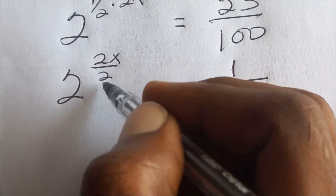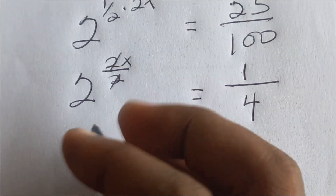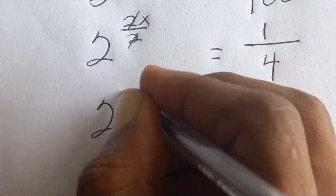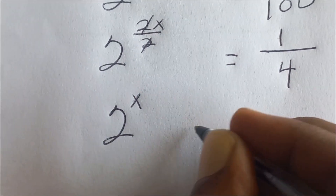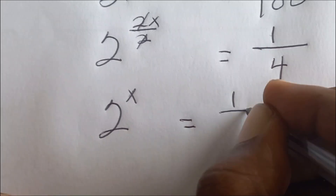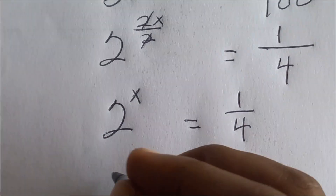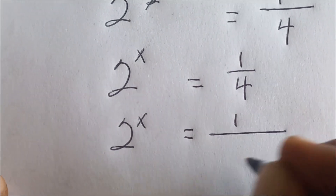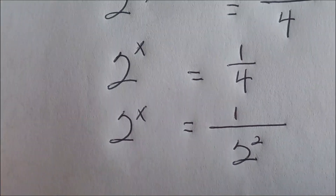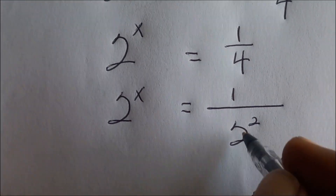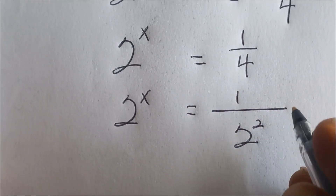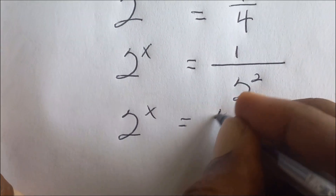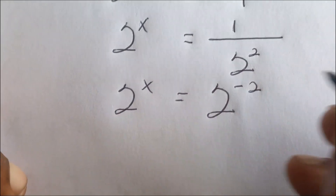Four times. So 2 will cancel, so now we are having 2 exponent x which is equal to 1 on 4. And this 1 on 4 can be expressed as 2 exponent — which is equal to 1 on 2 exponent 2. And don't forget, 1 on 2 exponent 2 we can rewrite as 2 exponent negative 2.